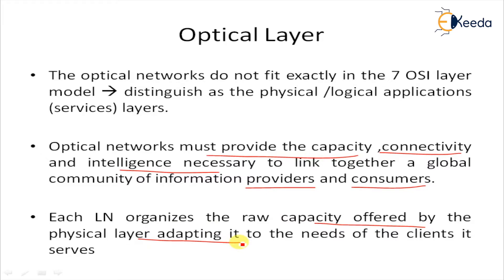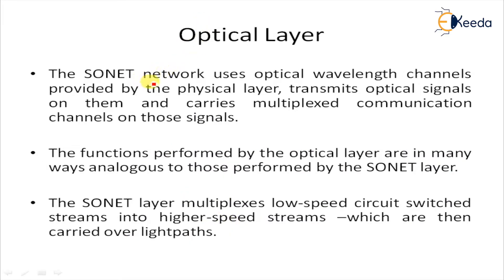For the service layer of a particular network, the SONET network uses optical wavelength channels provided by the physical layer, transmits optical signals on them, and carries multiplexed communications channels on those signals. The SONET channel can support a wide variety of services such as the telephone network, PSTN, or earlier VPN. In addition, the physical layer provides purely optical connectivity directly to end users via assigned wavelengths, thereby bypassing the logical layer.